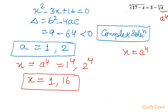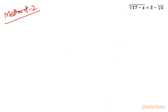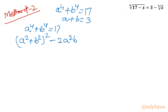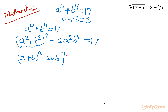Now I will demonstrate method number 2: the algebraic identity method. Starting from our equations a⁴ plus b⁴ equal to 17 and a plus b equal to 3. For the first equation, I use the identity (a² plus b²)² equals a⁴ plus b⁴ plus 2a²b², so a⁴ plus b⁴ equals (a² plus b²)² minus 2a²b². Writing a² plus b² as (a plus b)² minus 2ab, we substitute to get [(a plus b)² minus 2ab]² minus 2a²b² equal to 17.